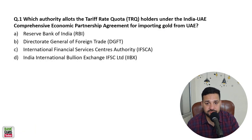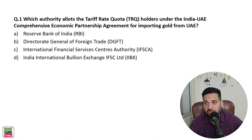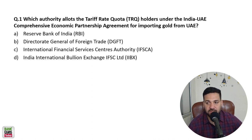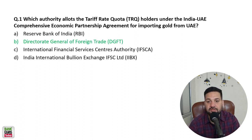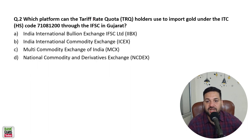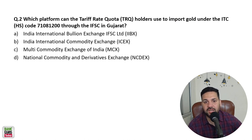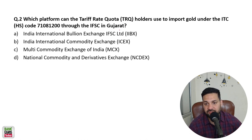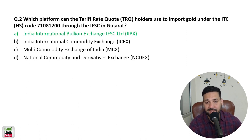Which authority allots Tariff Rate Quota (TRQ) holders under the India-UAE Comprehensive Economic Partnership Agreement for importing gold from UAE? That is the Directorate General of Foreign Trade (DGFT). Which platform can TRQ holders use to import gold under ITC code 71081200 through IFSC? It is IIBX — through IIBX they can import the gold.